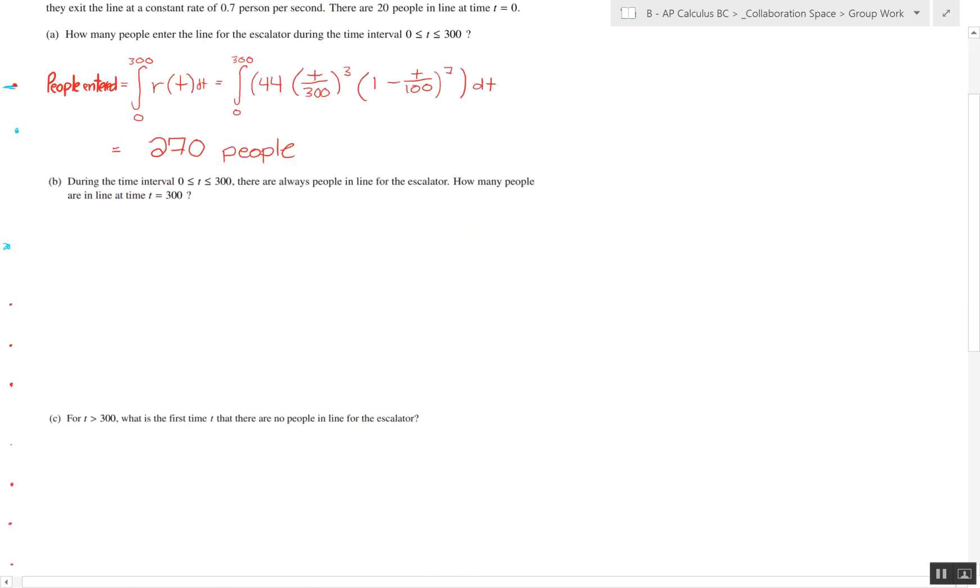Part B asks how many people are in line at time t equals 300. The number of people in line, basically the antiderivative of r of t, is going to be how many people have entered. Then we have to find how many people have left, which is this part right here, and we also have to have the initial component, how many people are at time equals zero. They're giving us at time equals zero there's 20 people in line.